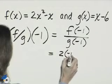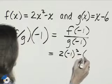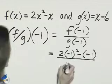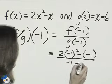2 times negative 1 squared minus negative 1. That's f of negative 1. g of negative 1 will be negative 1 minus 6.